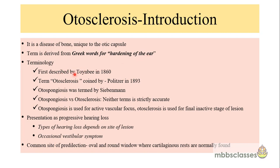This disease was first described in 1860 by Toynbee. The term otosclerosis was coined by Politzer in 1893. It is also known by another name, otospongiosis, a term coined by Siebenmann. Neither term is perfectly accurate, as they refer to different stages of the disease. Otospongiosis is used for the active early phase with an active vascular focus, while otosclerosis refers to the late stage where final sclerosis of the bone occurs, which is the inactive stage.